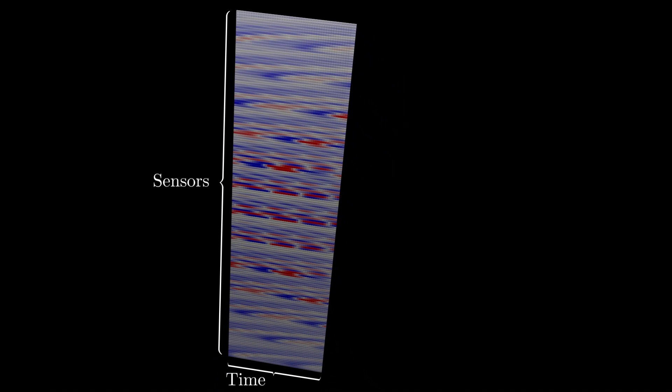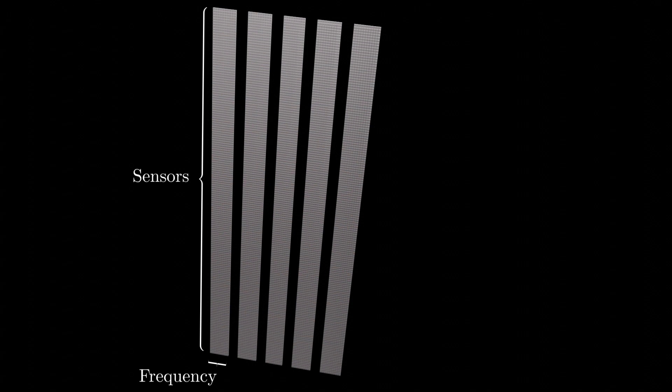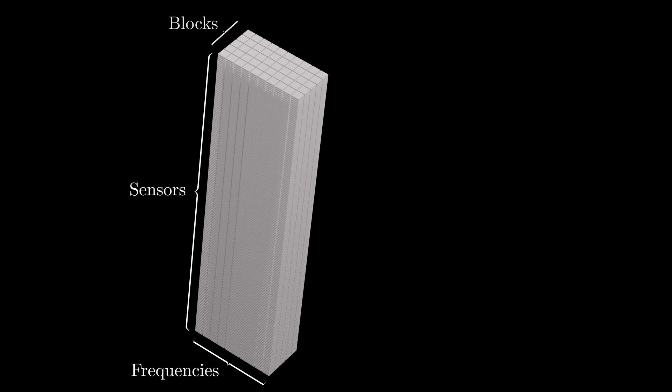Now we split the matrix into multiple blocks, exactly as you would do in the Welch averaging method. The block size is arbitrary, and the blocks can also have overlapping data. For each one of these blocks, we perform the FFT algorithm. So we have this 3D data structure with dimensions of sensors by frequencies by blocks.